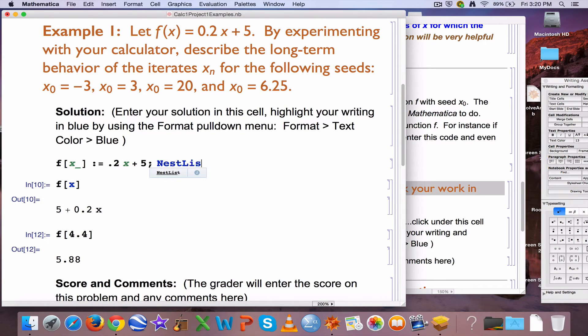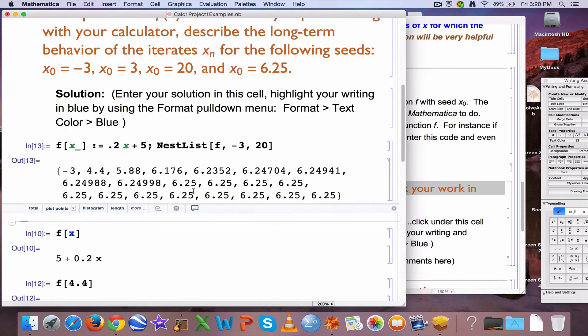Nestlist can do this all at once, and the syntax is nestlist capital N capital L, put the function name that you defined, put the seed, the starting value, negative 3, and put the number of iterates you want to see, for example, 20 of them. And there we go, there are the iterates.